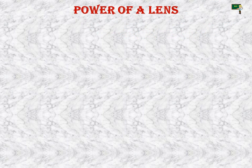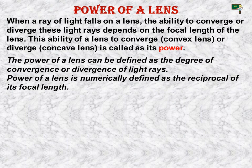Now, power of a lens. What do we mean by the power of a lens? When a ray of light falls on a lens, the ability to converge or diverge the light rays depends upon the focal length of the lens. This ability of a lens to converge — using a convex lens — or diverge — through a concave lens — is called its power. The power of a lens is defined as the degree of convergence or divergence of light rays.